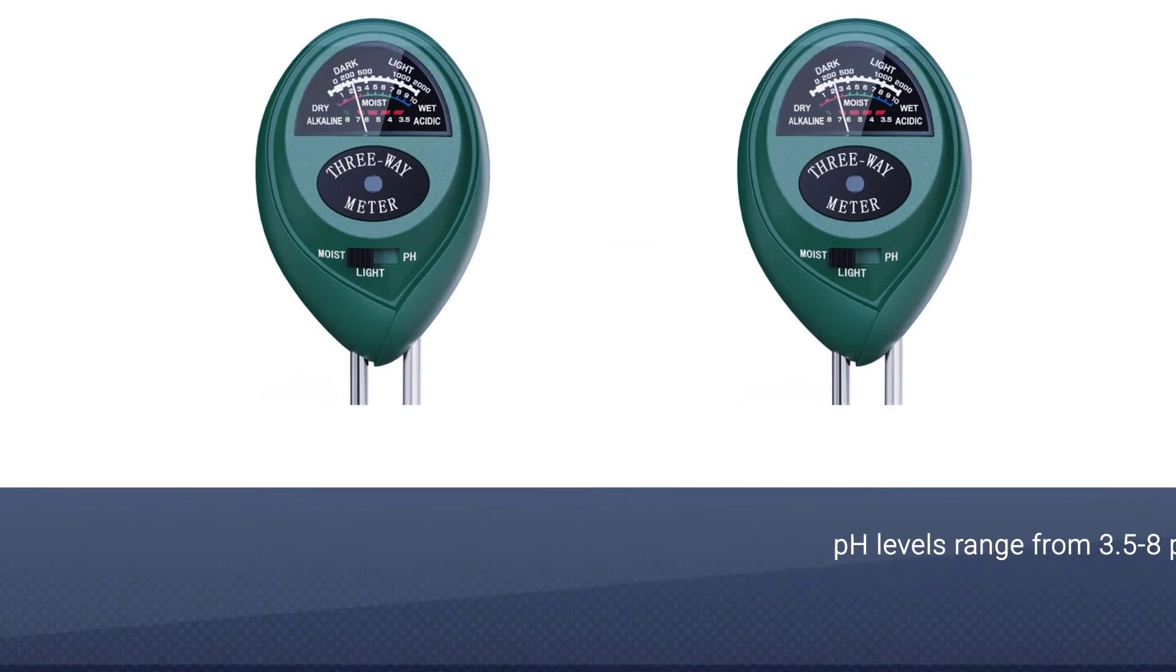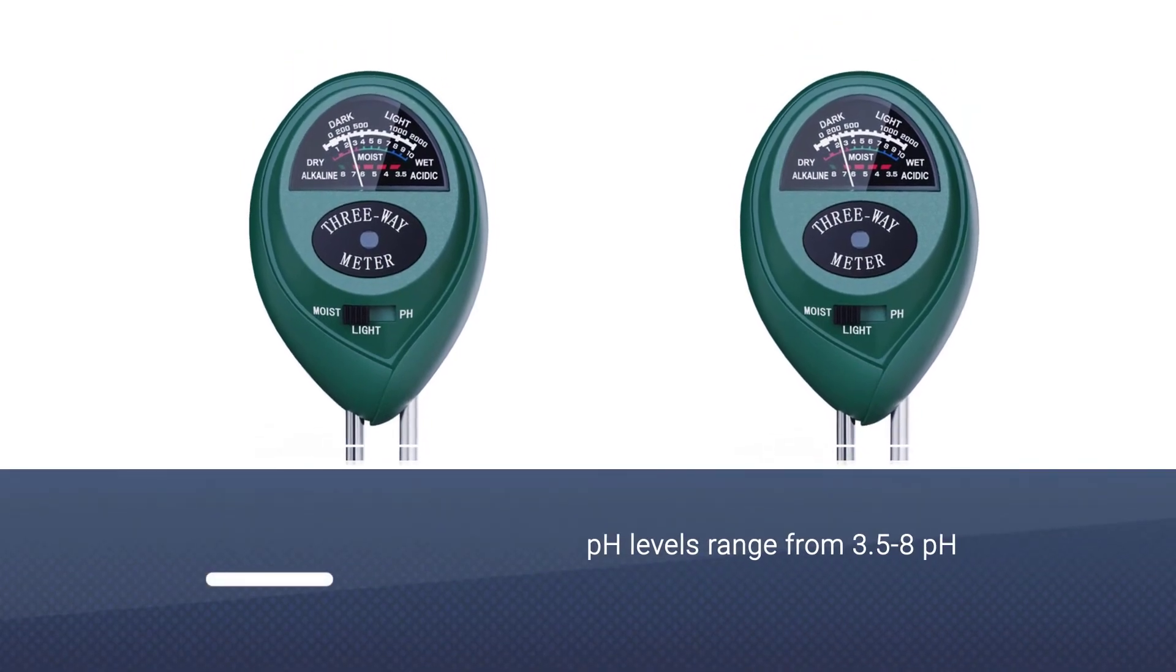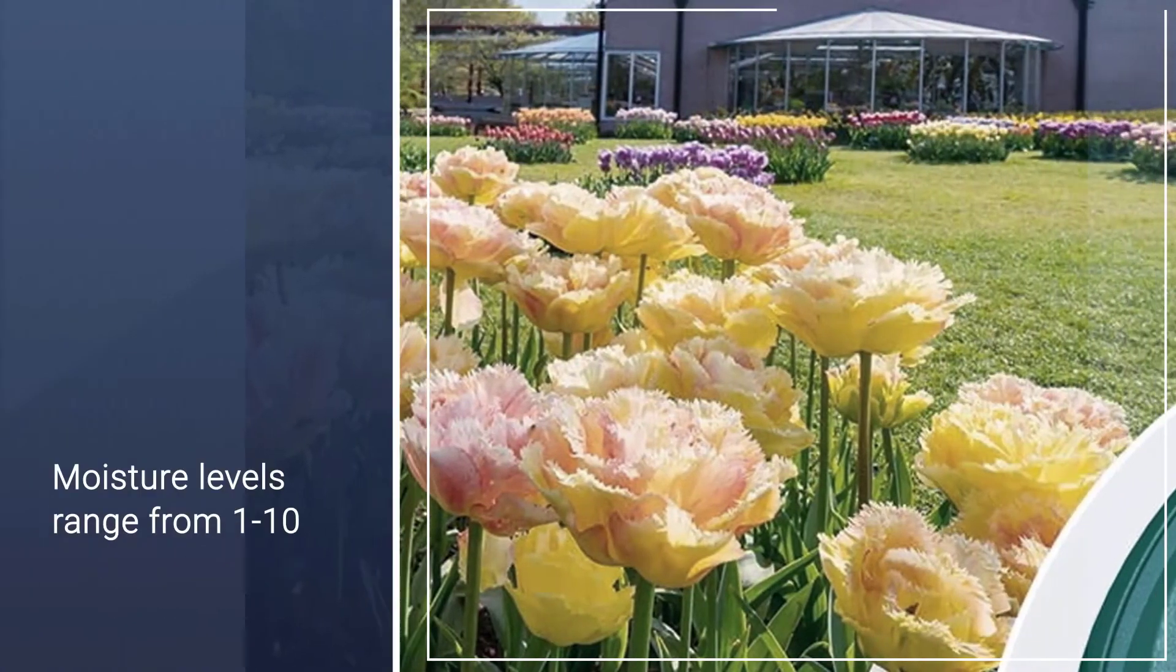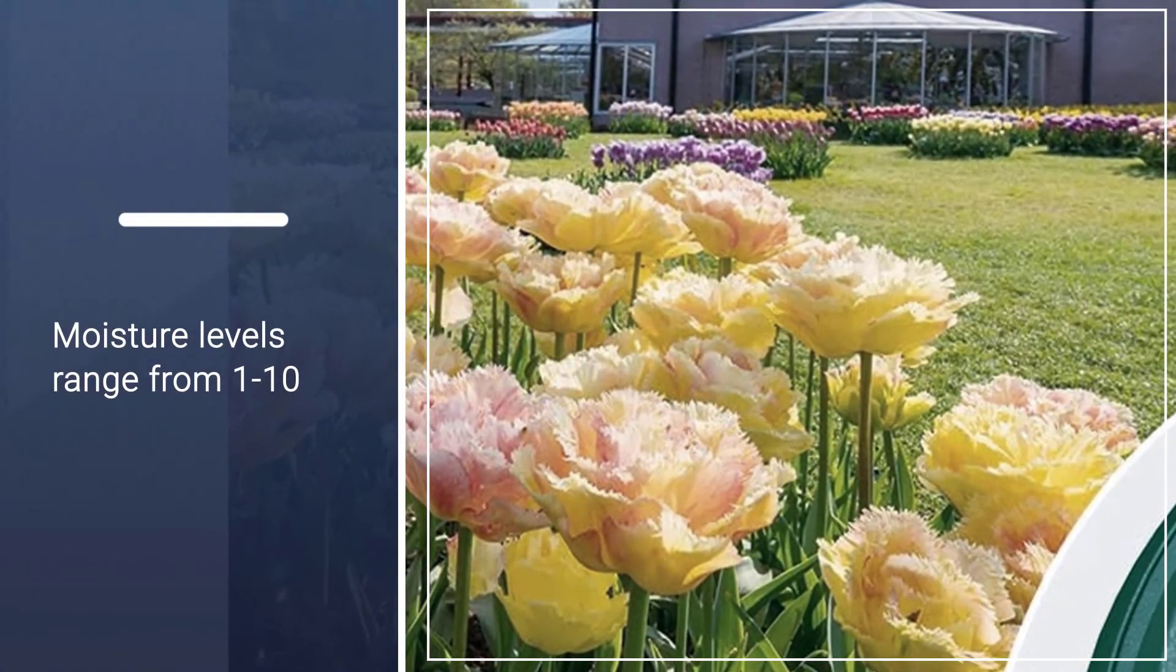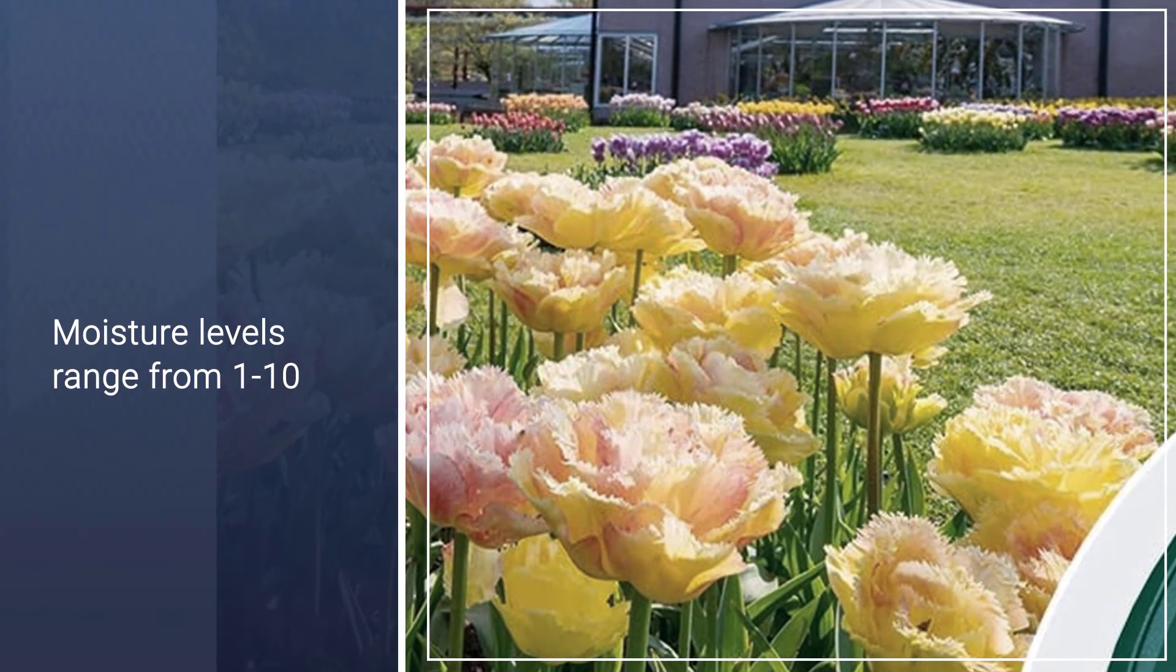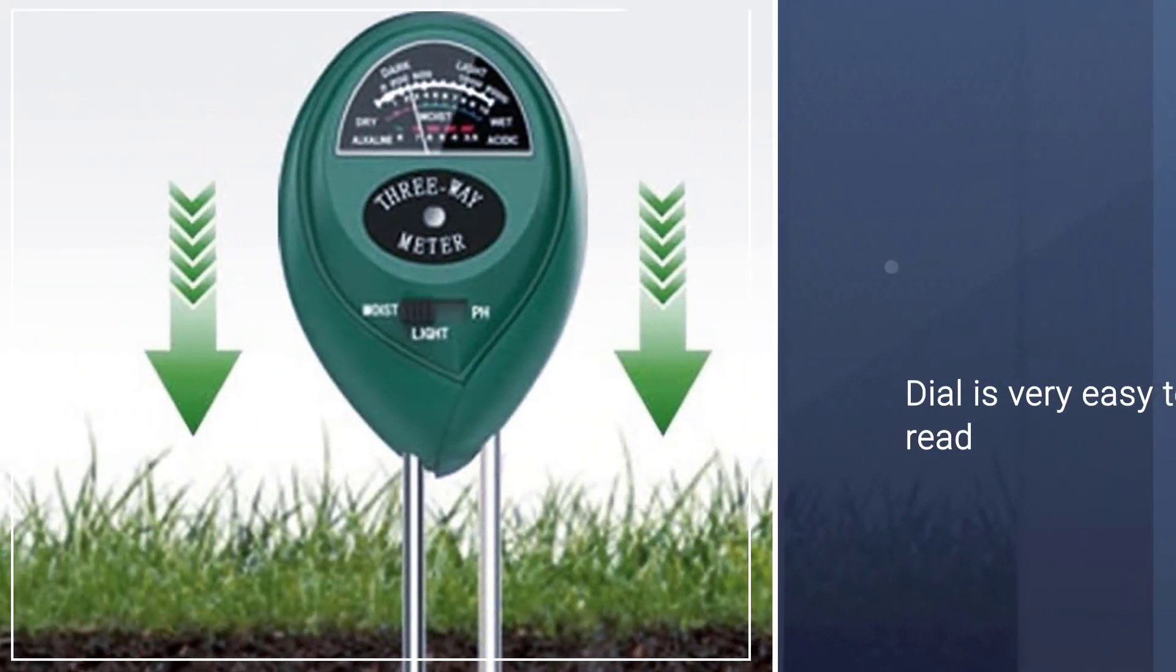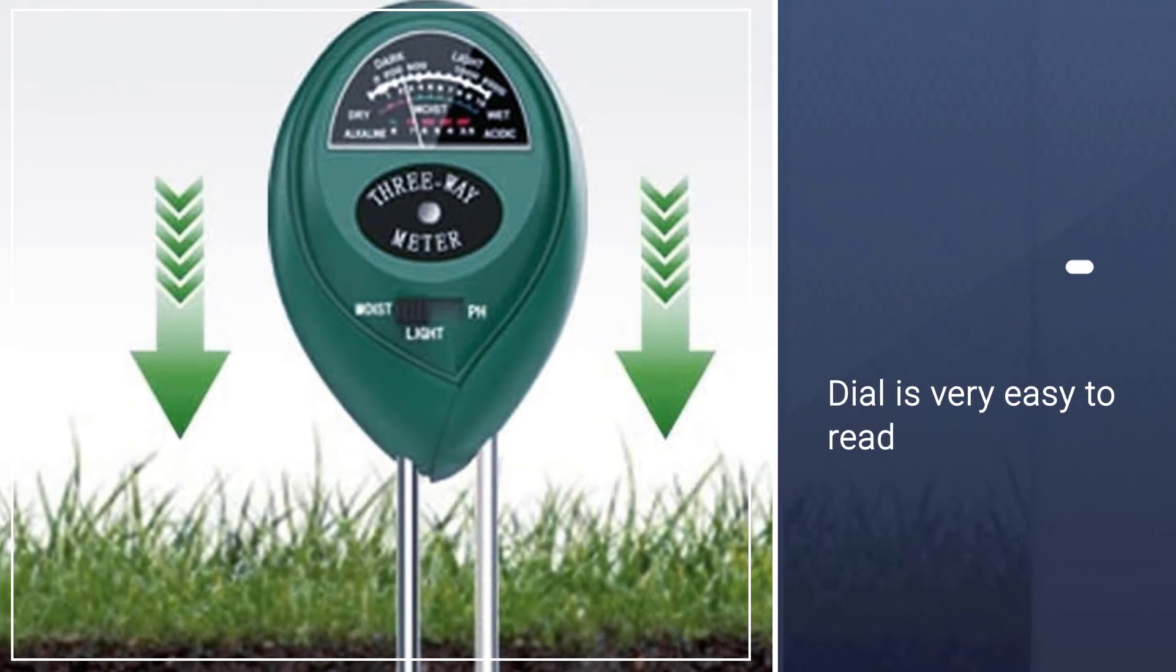pH levels range from 3.5 to 8: pH 3.5 to 6.5 is acid and 7 to 8 is alkaline. Moisture levels range from 1 to 10. The dial is very easy to read and there is no need for batteries. As the tester meter has a compact and portable design, you can carry it in your pocket while you are gardening.